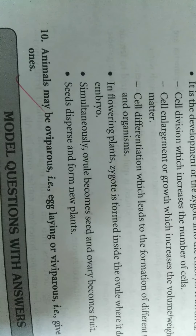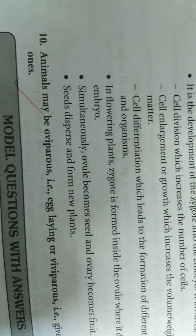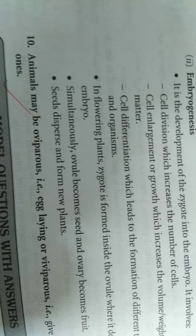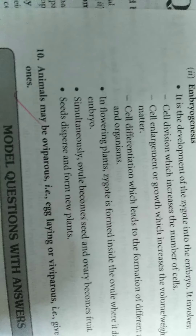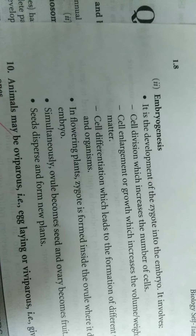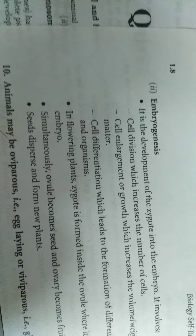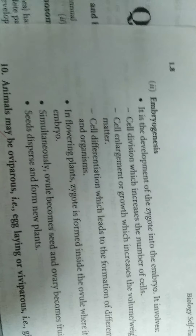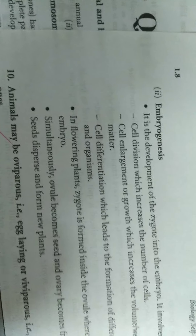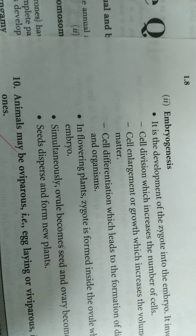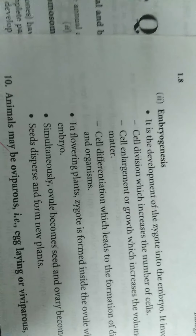In flowering plants, post-fertilization events include: sepals, petals, and stamens wither off; the pistil remains attached to the plant; the zygote develops into an embryo; the ovule develops into a seed; the ovary develops into a fruit; and the pericarp is produced as the wall of the ovary.